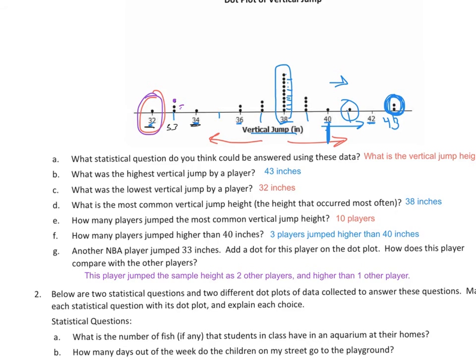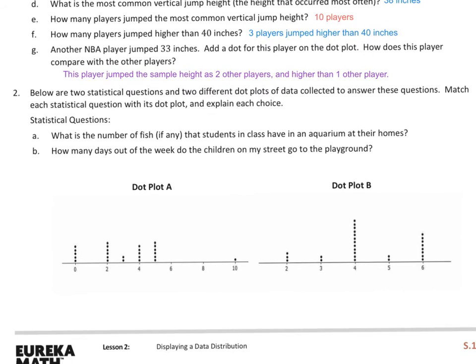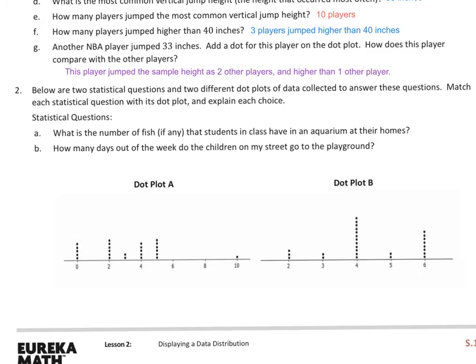So there's my answer right there. Now, down below, this is question two, below are two statistical questions and two different dot plots of data collected to answer these questions. Match each statistical question with its dot plot and explain each choice. So here's the two questions up here. What is the number of fish, if any, that students in a class have in an aquarium at their homes? And the second question down below says, how many days out of the week do the children on my street go to the playground? And I'll do that in blue.